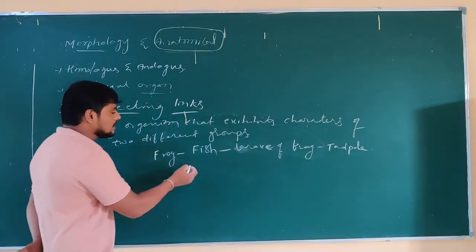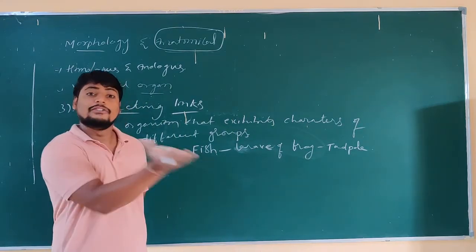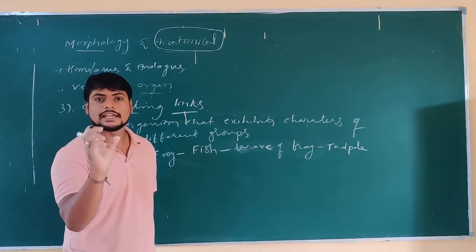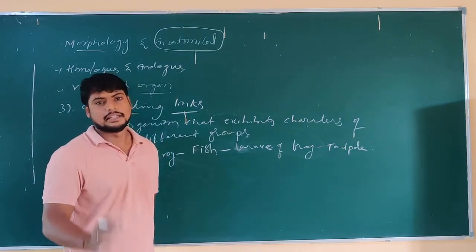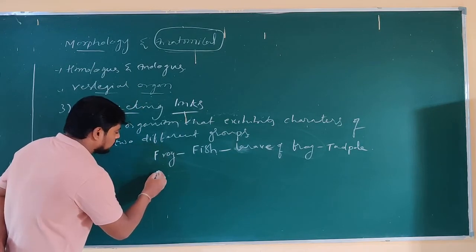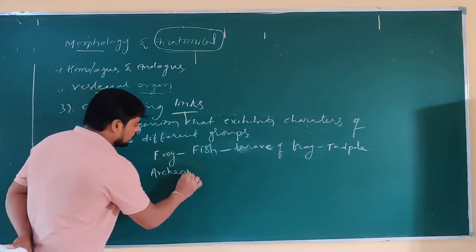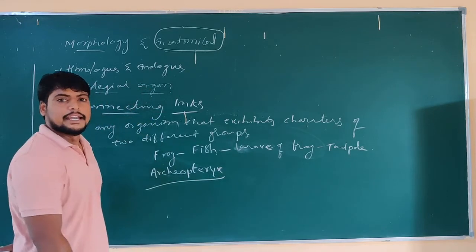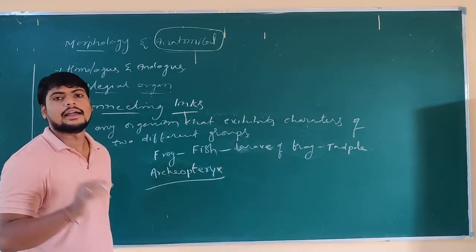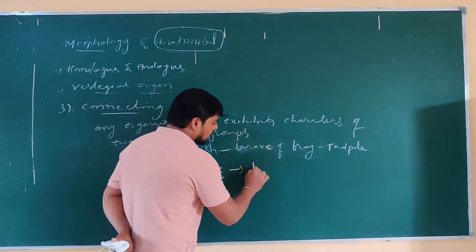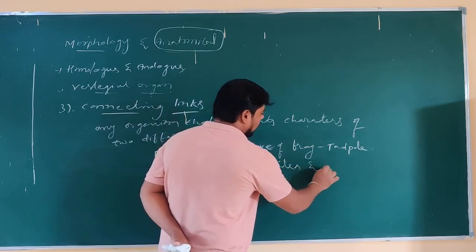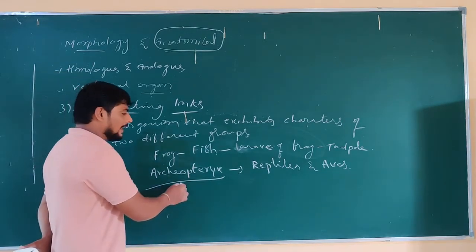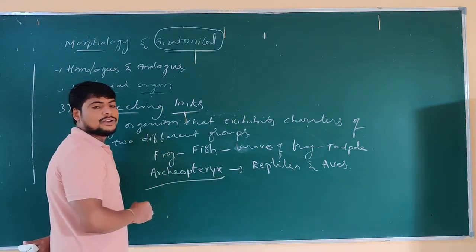But it is not a fish. The adult frog is totally different from the larval stage. So the frog acts as a connecting link between fish and other characteristics. Another example is Archaeopteryx — it is a connecting link between reptiles and aves. This Archaeopteryx existed in the Jurassic period.